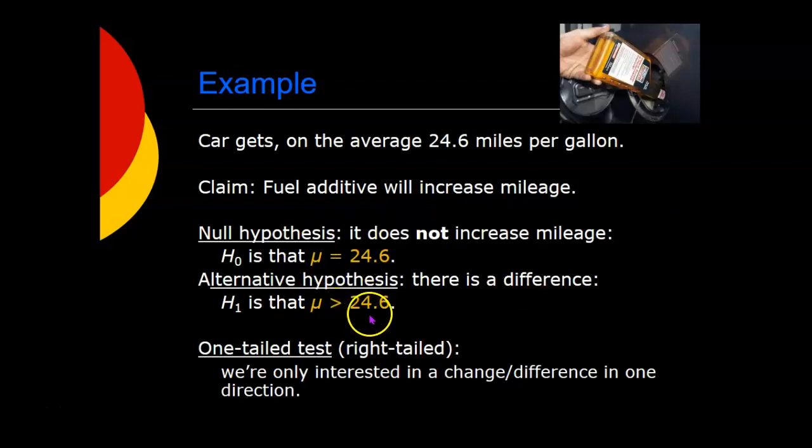And here, in this particular example, we're only interested in a difference in one direction. We only care whether or not it raises the mileage. Sometimes we only care about one kind of difference. Does the additive raise the mileage or not? Does the drug lower a fever body temperature or not? And sometimes we care about if there's a difference in either direction. Are boys and girls different either by boys scoring higher than girls or by boys scoring lower than girls? So a one-tailed test is when we're only interested in a change or difference in one direction. A two-tailed test would be when we're interested in a change in two directions.